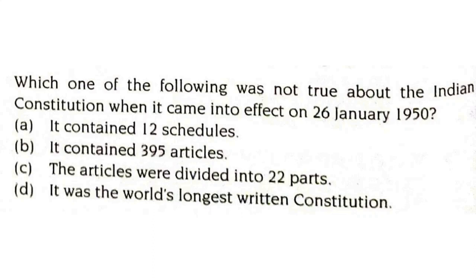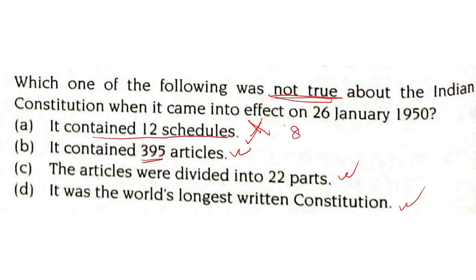Which one of the following was not true about the Indian constitution when it came into effect on 26th January 1950? It contained 12 schedules — this is wrong. It contained 395 articles — correct. The articles were divided into 22 parts — correct. It was the world's longest written constitution — correct. The wrong one is that it contained 12 schedules; it originally contained 8 schedules, and 4 more were later incorporated.